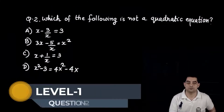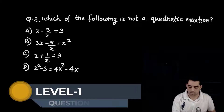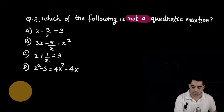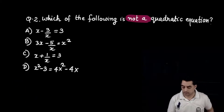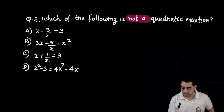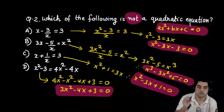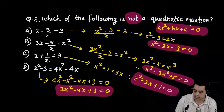Next question — question number 2: which one of the following is NOT a quadratic equation? Options: (a) x - 3/x = 3, (b) 3x - 5/x = x², (c) x + 1/x = 3, (d) x² - 3 = 4x² - 4x.